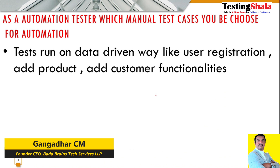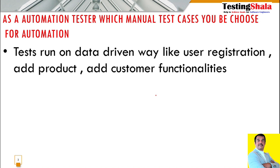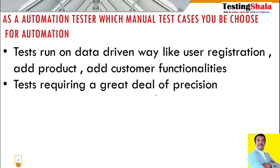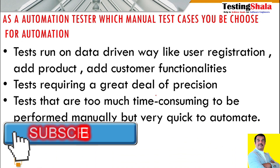The next reason would be whenever there are data-driven aspects in the test execution — such as functionality like user registration, adding a product, adding a customer, wherever you are adding certain things in the application where completely data-driven information is there and you are using that data to execute the test. Also, where there is an expectation of specific precision results that we have to validate, then definitely you should bring automation in those areas.